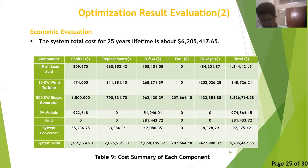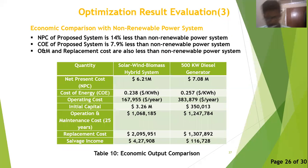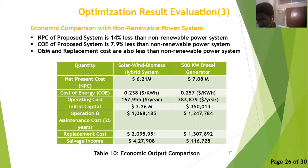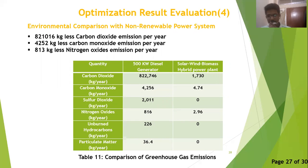We will now discuss why we should use the PV-wind biomass hybrid system instead of a non-renewable base power system. For this comparison, we consider a 500 kW diesel generator. For the same load profile, the net present cost of the hybrid system is 14% less than that of a 500 kW diesel generator. The cost of energy and operating and maintenance cost are also considerably less. The only drawback is that the initial capital investment is higher than a non-renewable power system. In terms of environmental impact, greenhouse gas emissions are much less with the hybrid system — it causes significantly less carbon dioxide, carbon monoxide, and nitrogen oxide emissions than a 500 kW diesel generator.